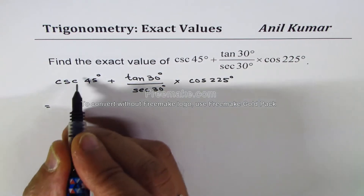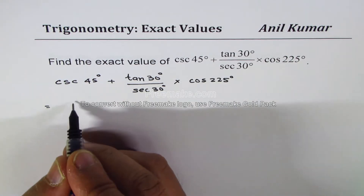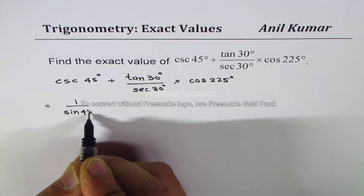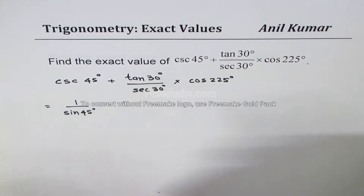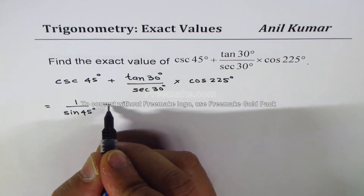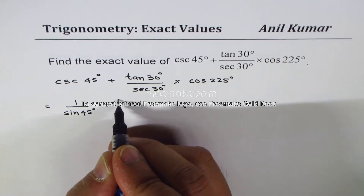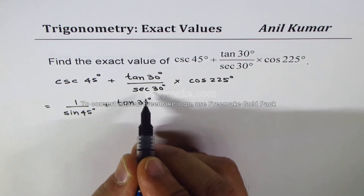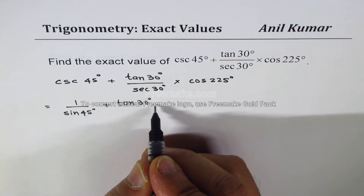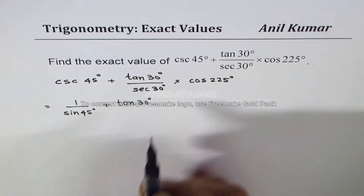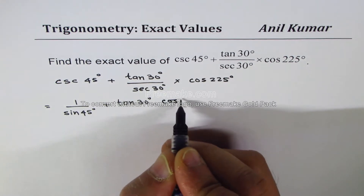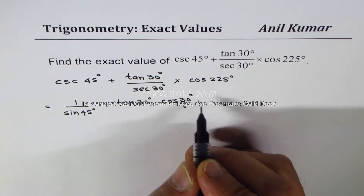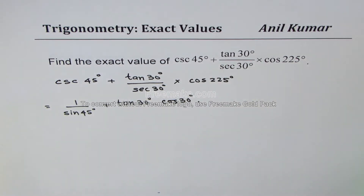Cosecant is 1 over sine, so let's write it as 1 over sine 45 degrees. 1030 is fine so we write that as such. Secant is 1 over cos, so in the denominator I could write this as cos of 30 degrees. And here we have cos of 225.